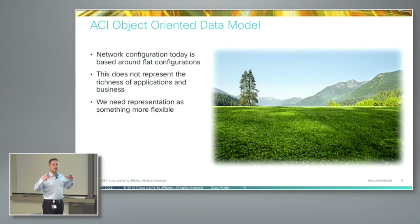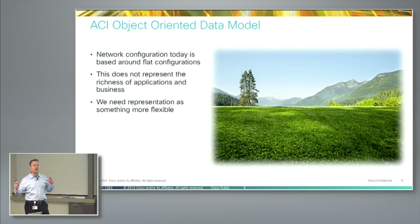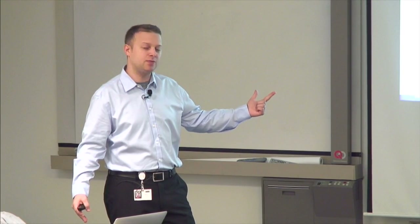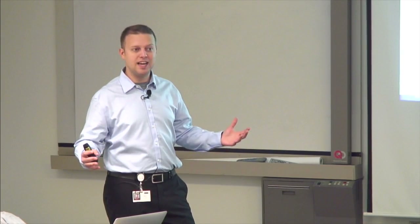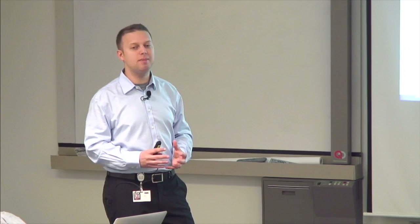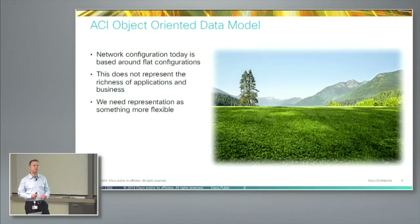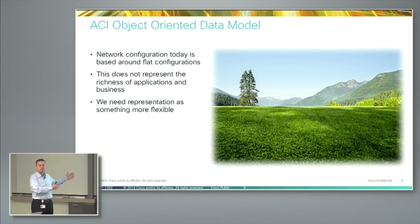The object model is the brainchild of some very smart engineers who sat in a room for about a year and figured out how to take everything in the data center - all different protocols, connectivity models, how you represent an interface - whether it's Ethernet, a VLAN, a layer three port channel - and model all of it in a very usable, singular abstracted data format. The richness needed to describe not only the network, but also applications, compute, and storage is all reflected within the model.